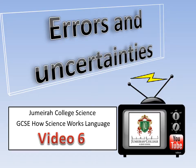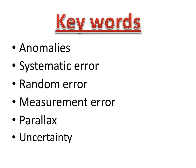Errors and uncertainties are a big part of scientific research and you'll always have to deal with them whenever you're working. A lot of words to learn today: anomalies, systematic errors, random errors, measurement errors such as parallax, and uncertainty.